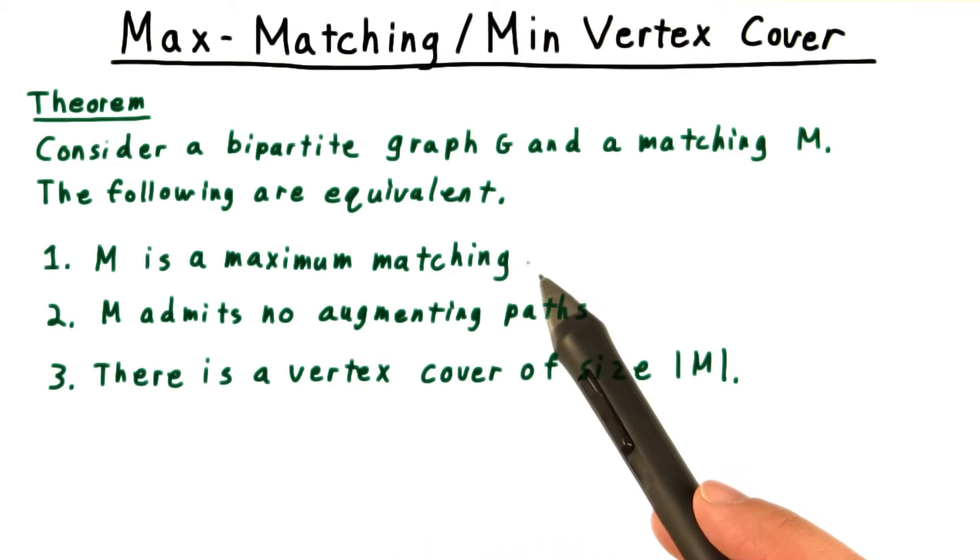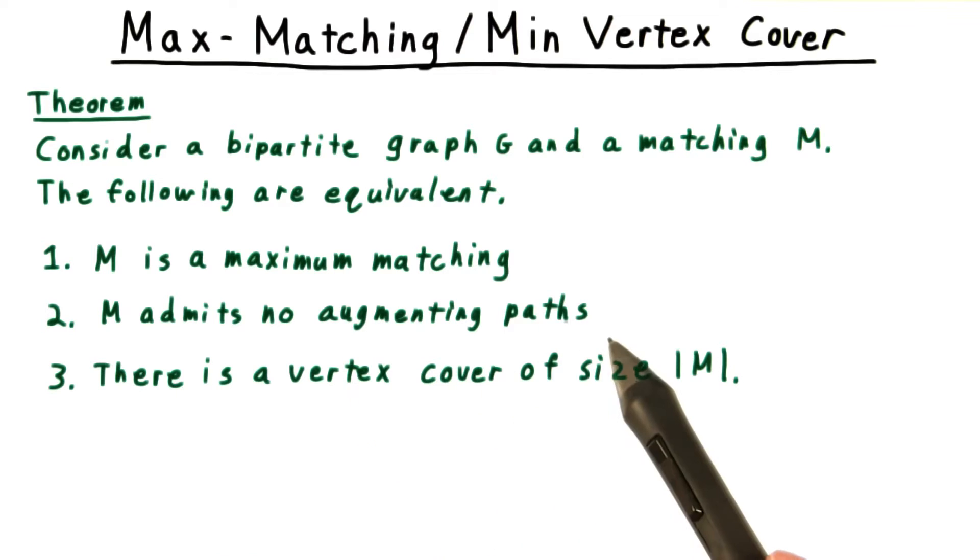M is a maximum matching. M admits no augmenting paths. And there is a vertex cover that has the same size as the size of the matching.